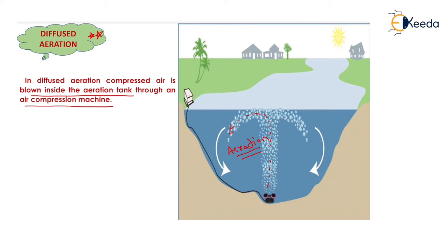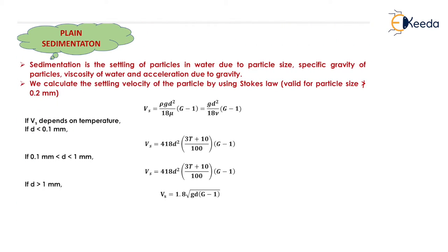All the aeration processes are now complete. Next, we will see the plain sedimentation process. In the screening process, we removed the larger impurities from the water, and in the aeration process, we removed the larger organic matter. Now we want to remove very fine impurities of particle size less than 0.2 mm, for which we will need the plain sedimentation process.